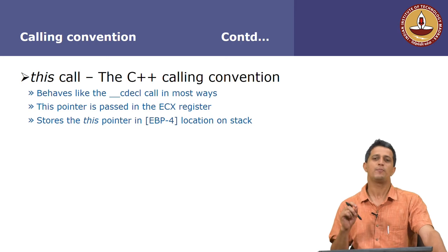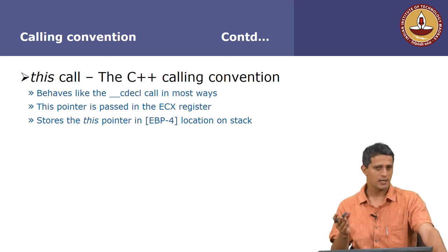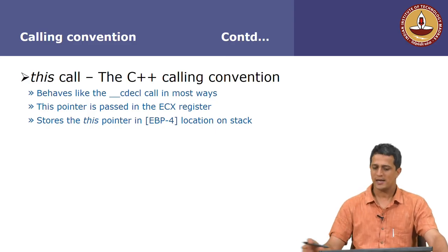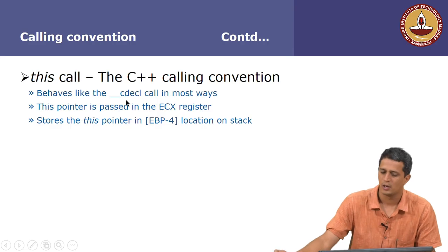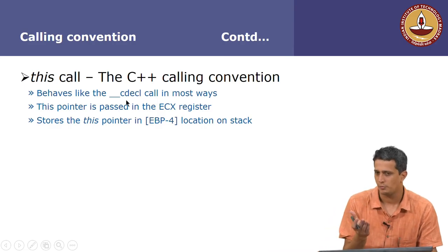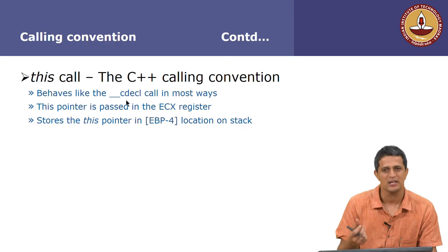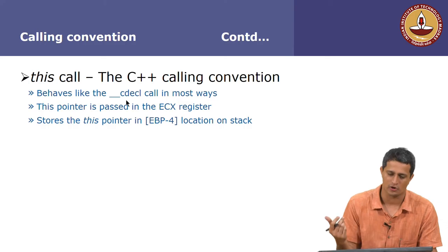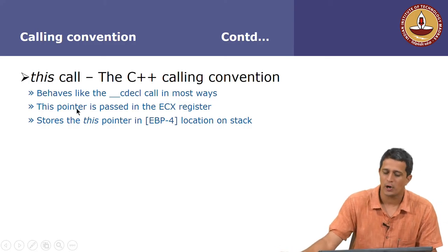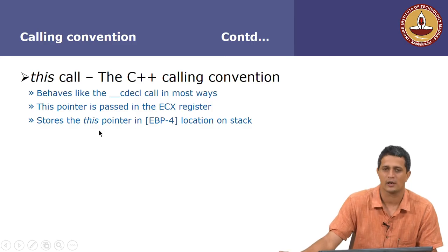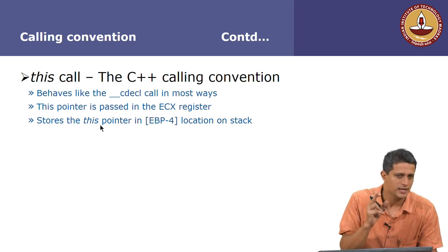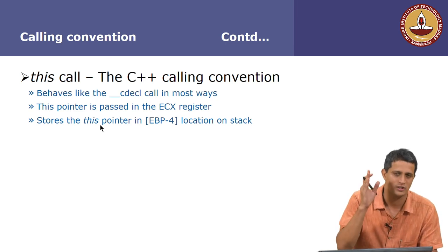That is known as a thiscall. If you use G++ instead of GCC, every member function will be translated using thiscall. It behaves like the CDECL call: stack cleanup happens outside using ADD ESP, N. The THIS pointer is passed in the ECX register, and it stores the THIS pointer in the contents of EBP minus 4, meaning the first local variable in the function is actually the THIS pointer on the stack.